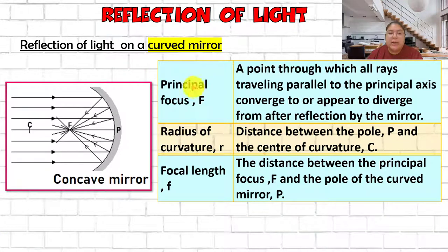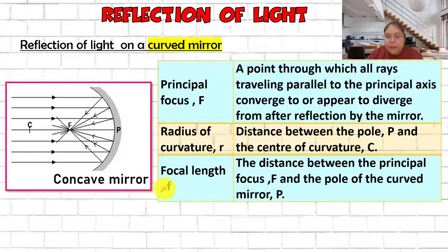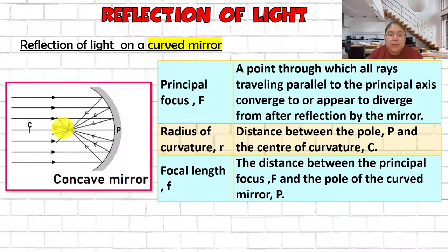The principal focus, capital F, is the point through which all rays traveling parallel to the principal axis converge, or appear to diverge from, after reflection by the mirror. The focal point is where all parallel light rays must reflect to. The radius is the distance between P and C. The small f is the focal length - the distance between the principal focus and the pole of the curved mirror.